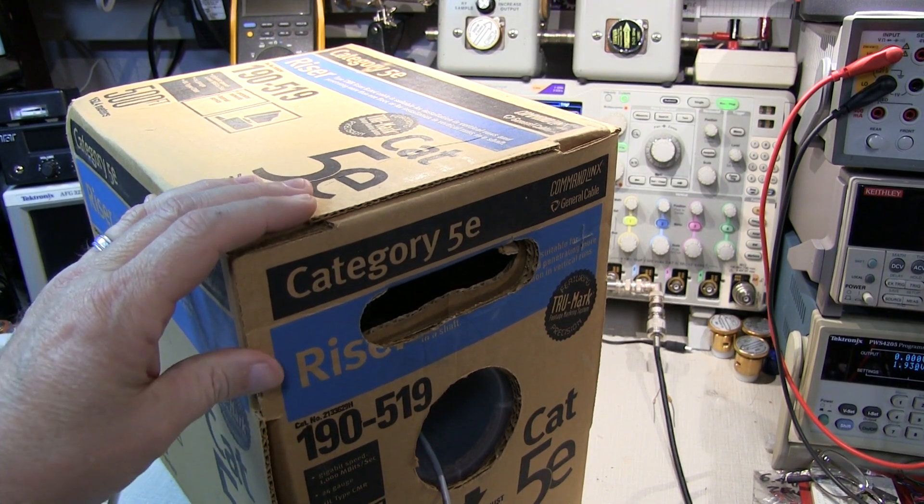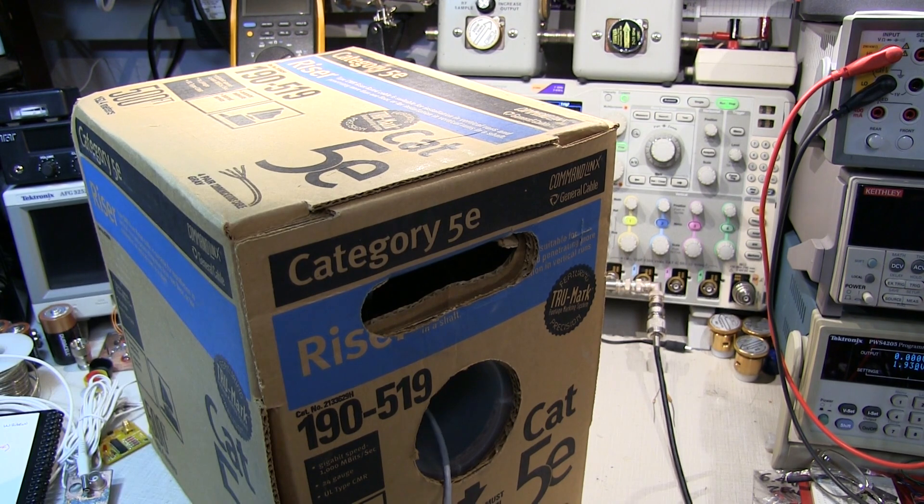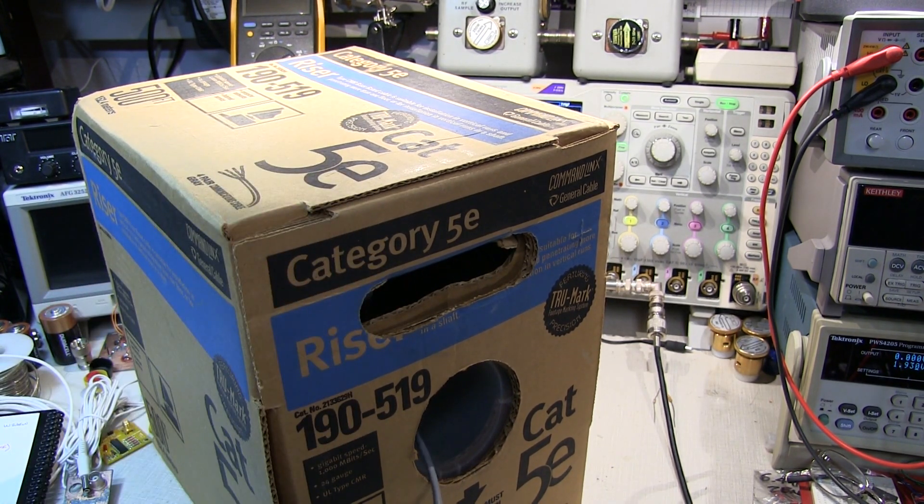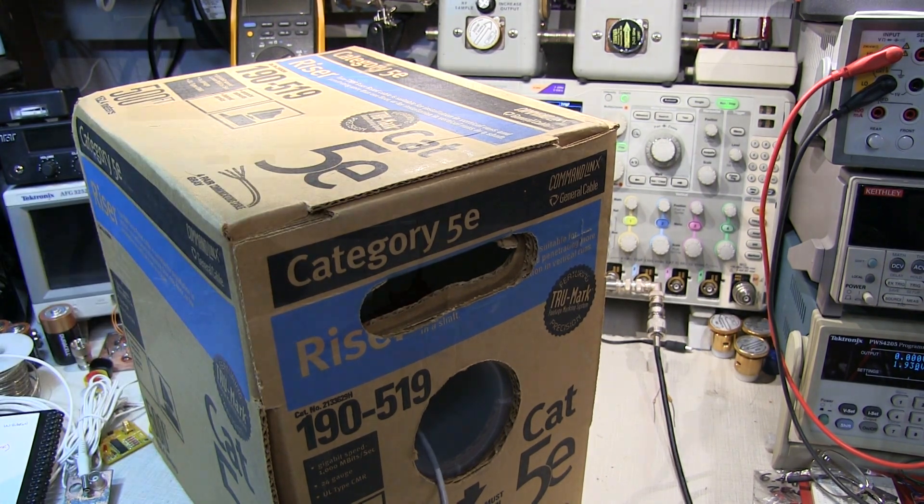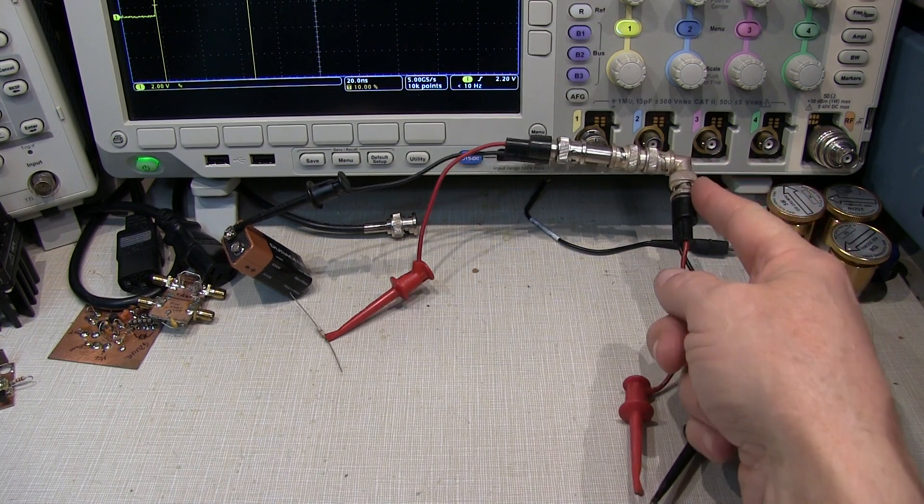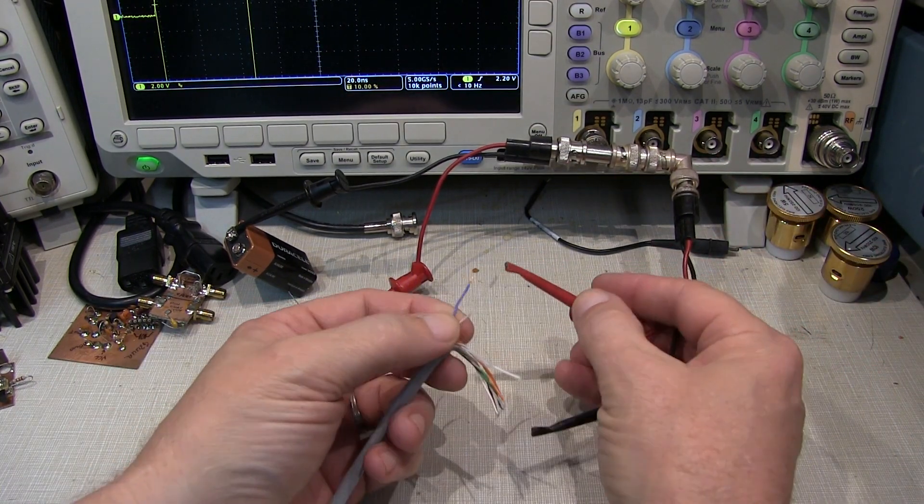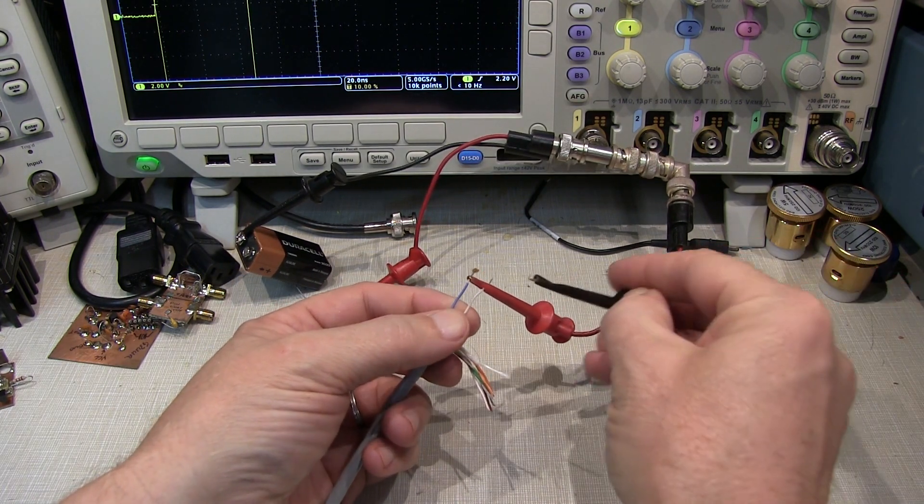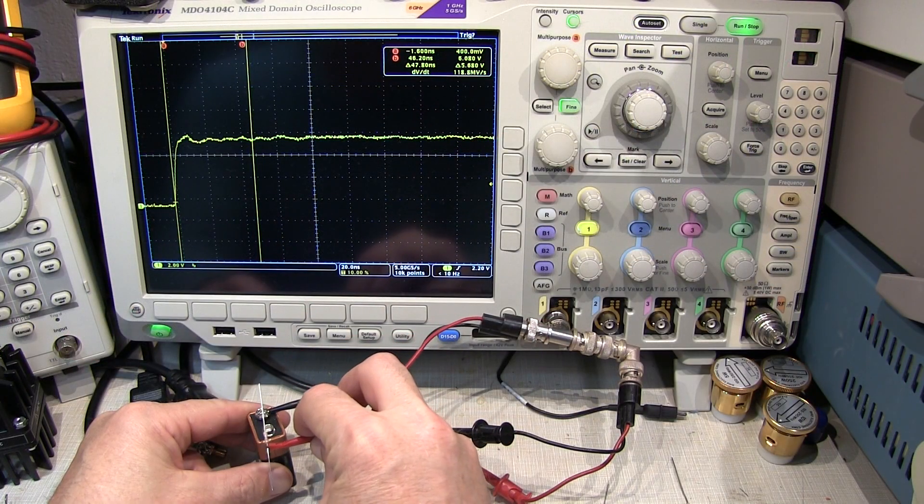I've got a box of Cat5e Ethernet cable that I used to wire my house here about 10 or 12 years ago. And I've got some unknown length left in the box. So let's apply this same measurement technique to figure out how much cable I've got left in here. And so I took off the unknown coax that I was measuring here, replaced it with another set of BNC to clip leads. And I'm just going to measure the blue twisted pair here. So we'll just connect up to those two leads right there. And we'll go hit it with the 9-volt step.